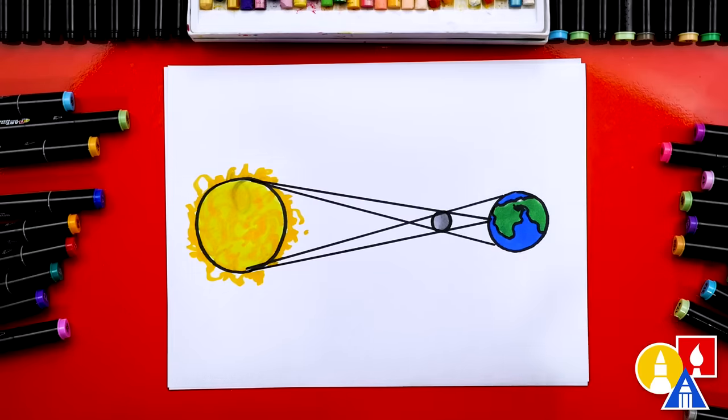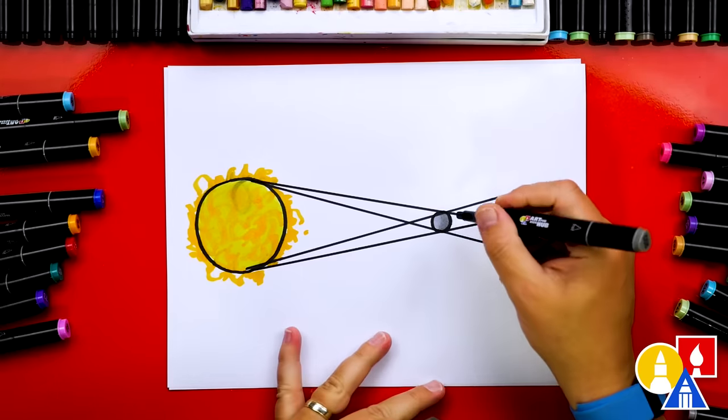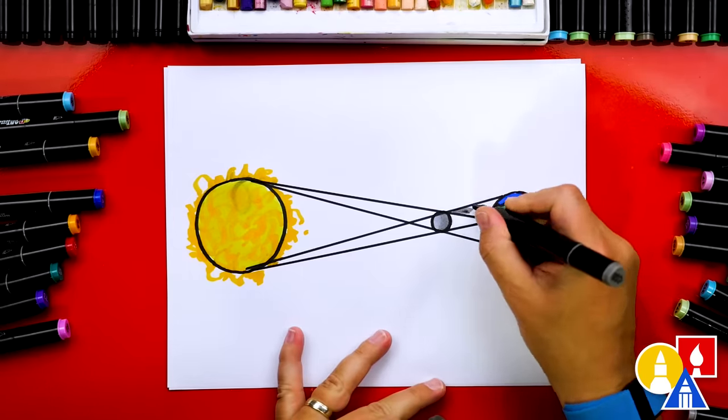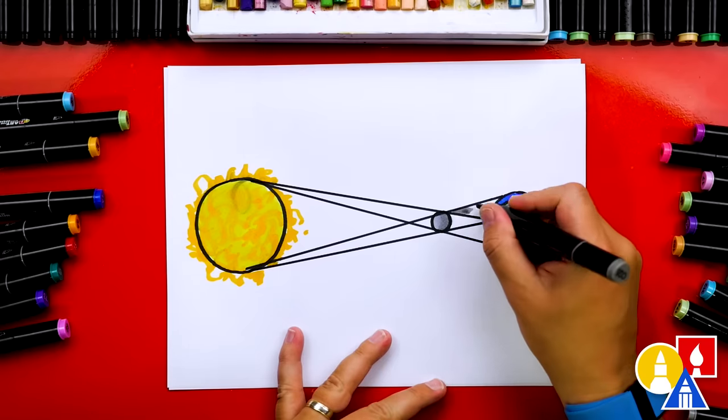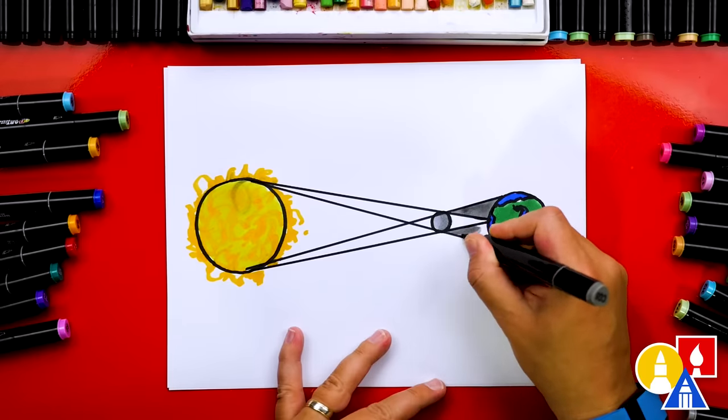Now let's color in the shadows. The top triangle and the bottom triangle are partial shadows or it's also called the penumbra and we're going to use a light gray to color that in since it's not a complete shadow. This might be a little too dark. That's all right.